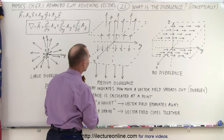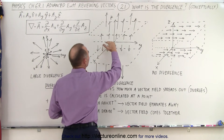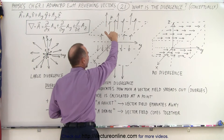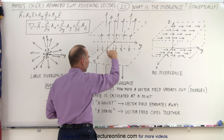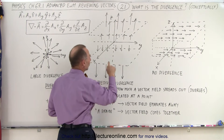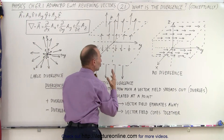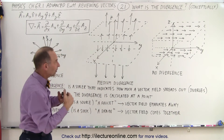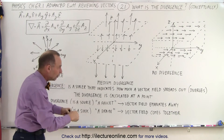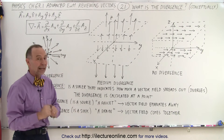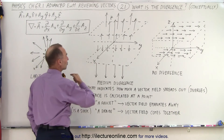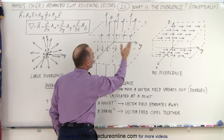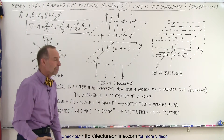In the second field, the vectors seem to increase going upward in the z direction, and increase in the negative direction when going further down. So when I travel up or down, I see a change in the length of the vectors — the vector field is increasing going up and increasing going down in the negative direction. Notice that if I travel in the x or y direction, there seems to be no change in the vector field magnitude.